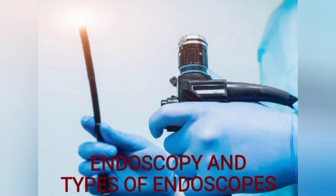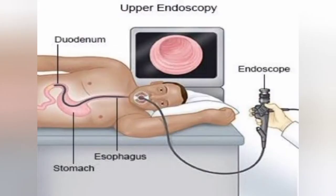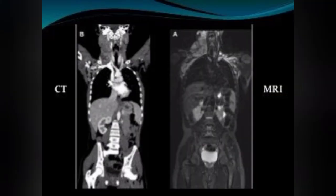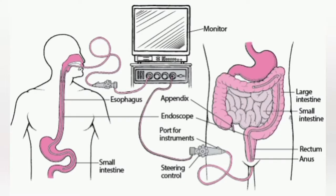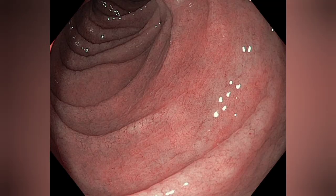Please subscribe to our channel to get every update. Endoscopy is a simple procedure to look inside the body. The tool used to examine the interior of hollow organs or cavities of the body is called an endoscope. Imaging systems like X-ray, MRI, CT, or PET take images of the body or organs from outside.